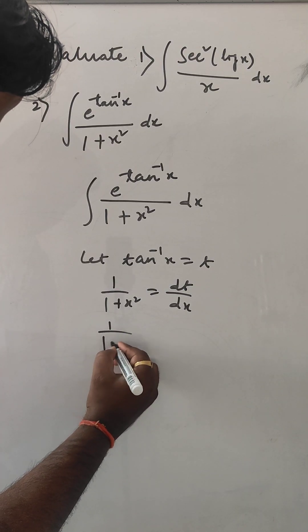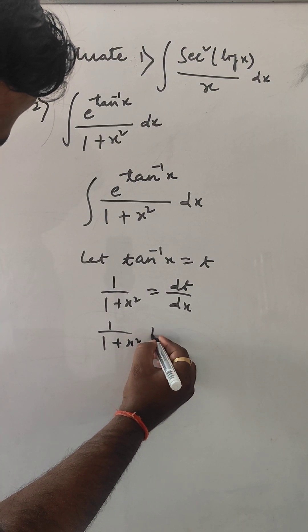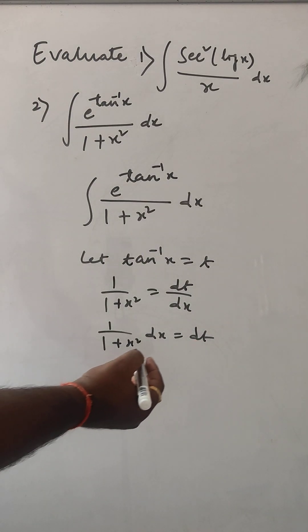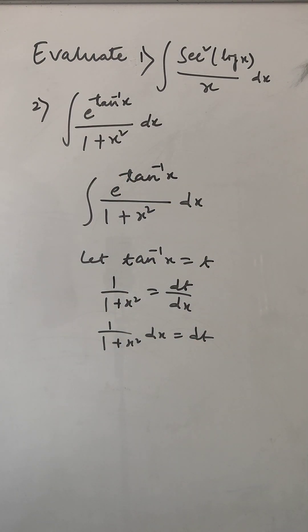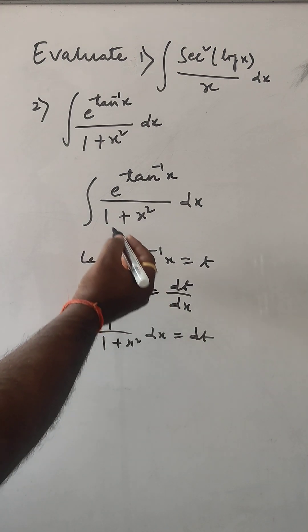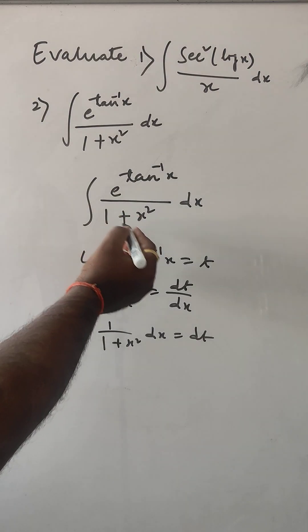So 1/(1 plus x square) dx equals dt. Now, same thing we can put here. 1/(1 plus x square) dx, we can put dt.